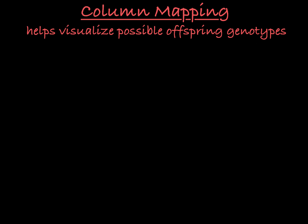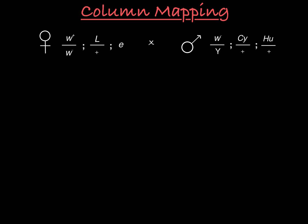Let's start by looking at our parent generation. In this example cross, we will have a female that is heterozygous W plus W minus, heterozygous lobe over wild type, and homozygous ebony mutant. This female mates with a male who is W minus, curly over plus, and humeral over plus.